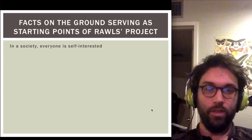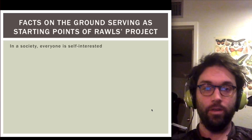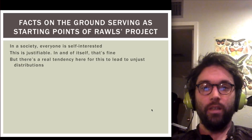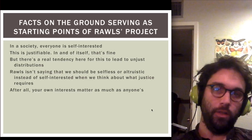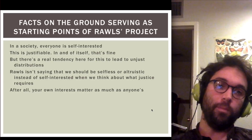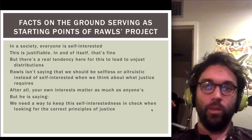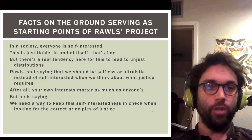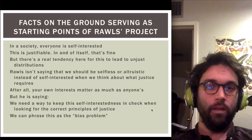First, in a society everyone is self-interested. That doesn't mean cold-hearted or selfish — it just means we're all concerned about our own welfare, as we should be. But there's a real tendency for this to lead to unjust distributions. Rawls isn't saying we should be altruistic instead of self-interested when thinking about what justice requires. He is saying we need a way to keep this self-interestedness in check when looking for the correct principles of justice — if we all just go for what's best for me, it's going to lead us astray.